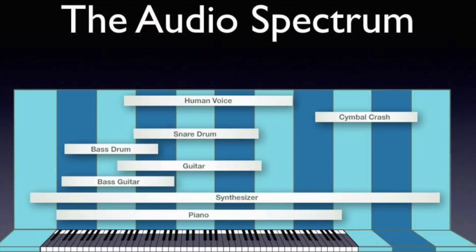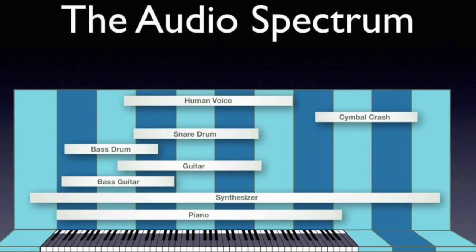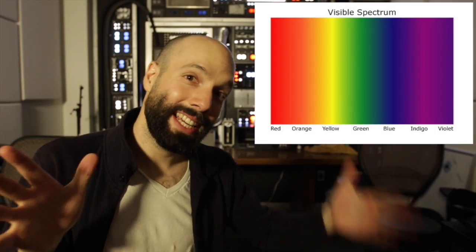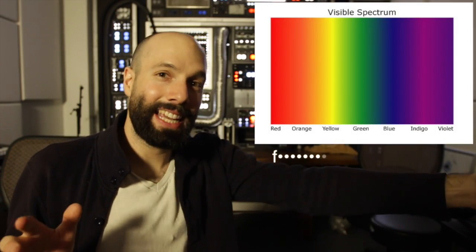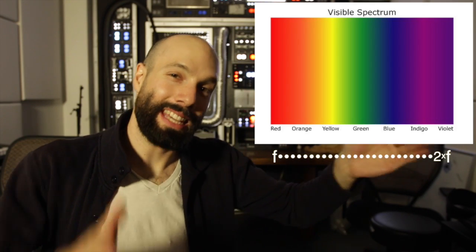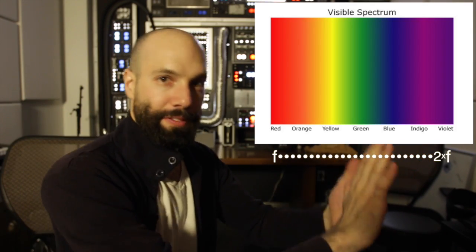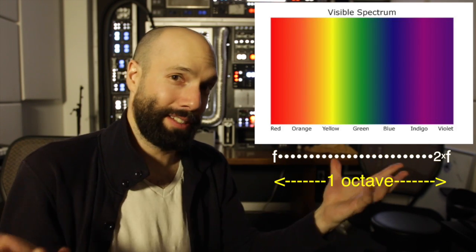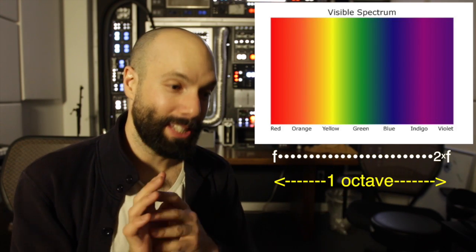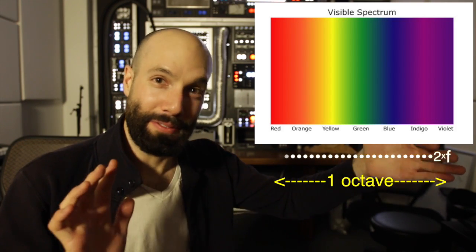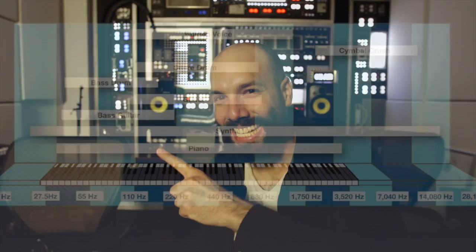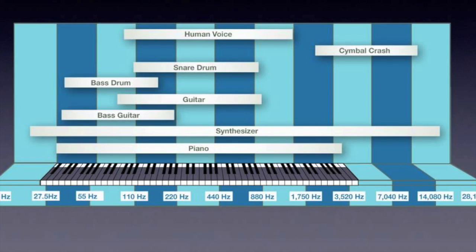But the range of sound frequencies that we can hear is far, far greater than the range of light frequencies that we can see. When looking at all the colors of the rainbow, from red to violet, the violet light only has twice the frequency of the red light. Sometimes that range — that one doubling of frequency — is called an octave. Human vision spans one octave in frequency. But human hearing spans 10 octaves!